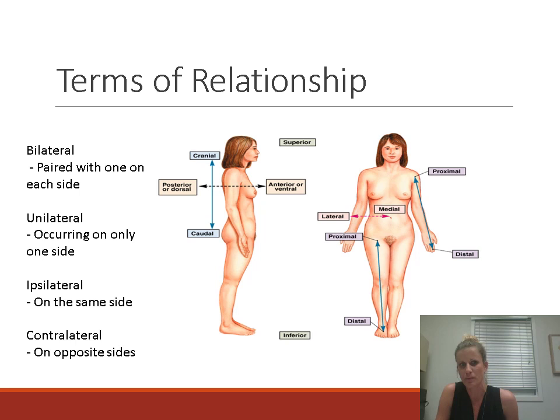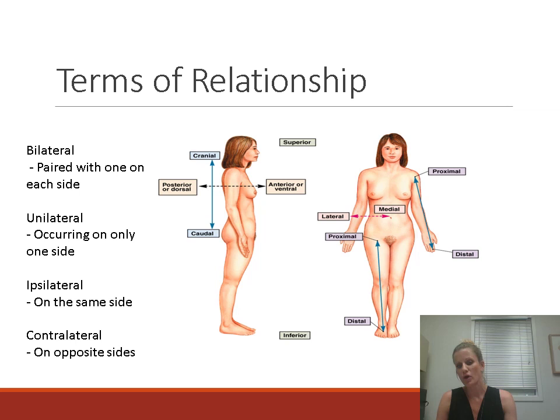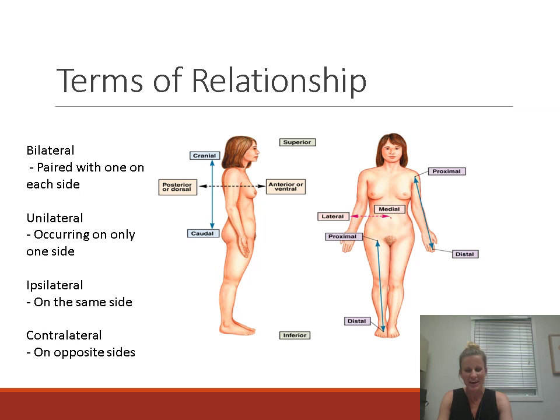Bilateral means something is paired with one on each side of the body — the eyes, ears, lungs, and kidneys are bilateral. Unilateral means occurring only on one side — the liver, gallbladder, and pancreas are all unilateral. Ipsilateral means two things are on the same side of the body — your right eye and right ear are ipsilateral. Contralateral means on opposite sides — your left and right eyes are located contralaterally.